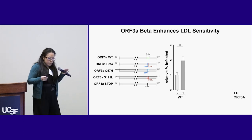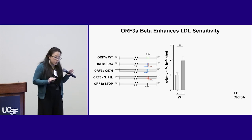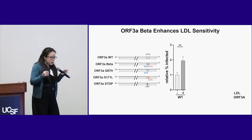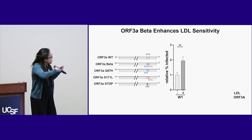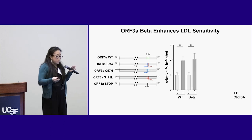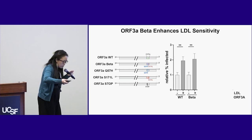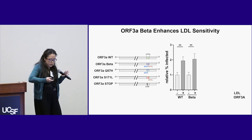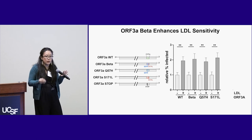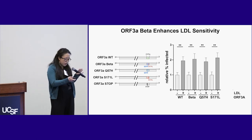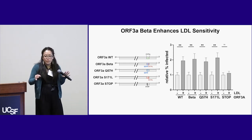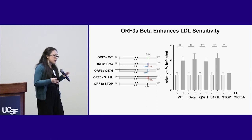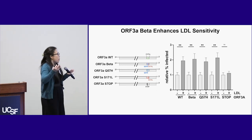As virologists, we want to move beyond individual protein expression. We've taken our infectious clone system and made modifications just to ORF3A. Our wild type infectious clone responds to LDL as expected. When we add the beta variant mutations, we see a minor increase in sensitivity to LDL, and we see the same phenotype in our two point mutants — all in an infectious clone setting where just ORF3A is modified. Critically, if you add a stop codon in ORF3A to prevent its expression during infection, you do not get a response to LDL, confirming that ORF3A is our causative factor.